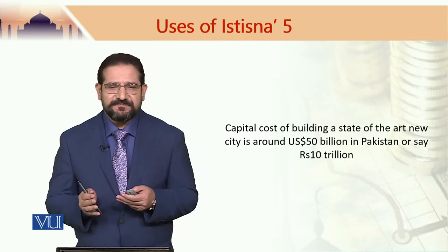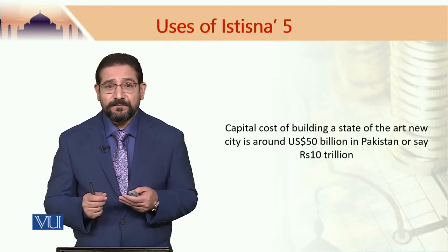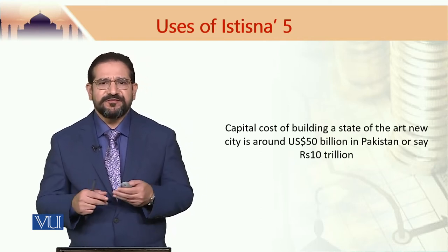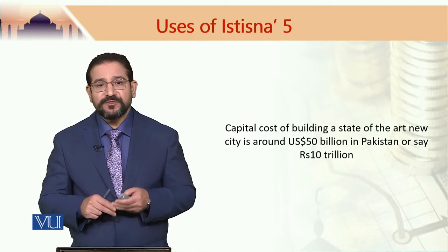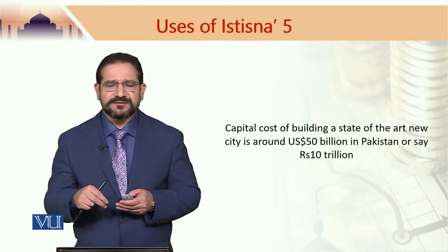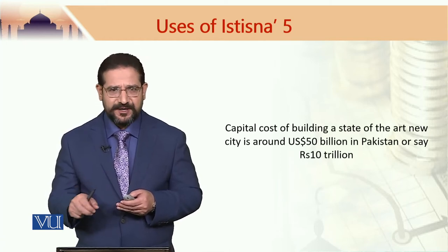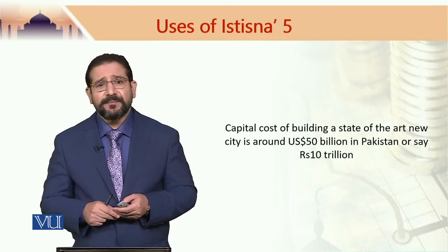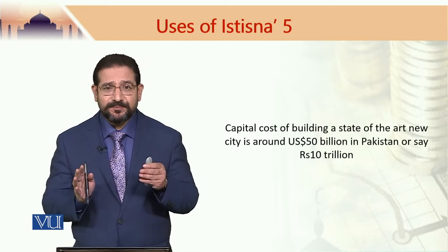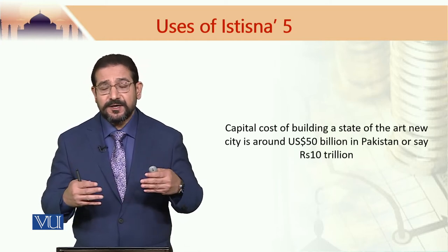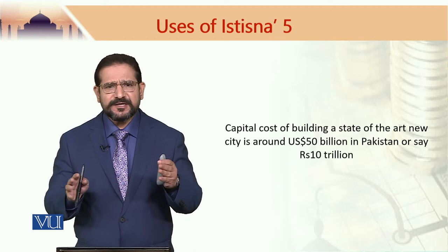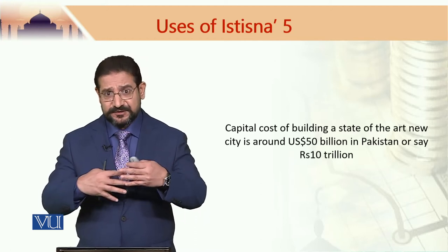Now the capital cost of constructing a city is quite huge. I believe that in the case of Pakistan, if we want to build a new state-of-the-art city, it could cost about 50 billion dollars. Aur agar ek generous exchange rate lagaya jaye — 200 rupay ka 1 dollar — so that would be about 10 trillion rupees, yani 10 kharab rupay, jo lagte hain ek state-of-the-art nai city banana mein. Uske andar makane toh log binate aate rahenge; uska infrastructure banana mein yeh cost hai.